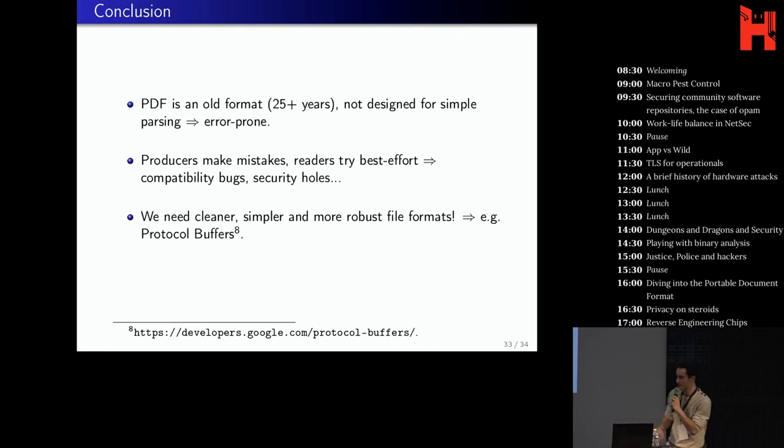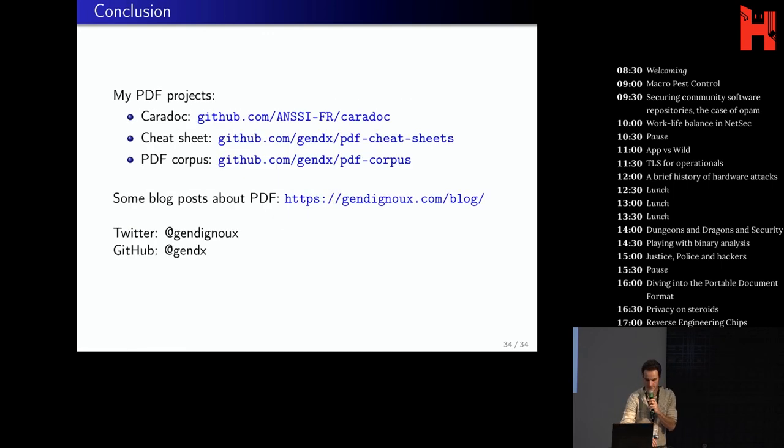So to conclude, PDF is a very old format. Well, it's 25 years old, but it hasn't evolved so much at the syntax level. And it wasn't designed for simple parsing, which is error prone. Also, producers make mistakes, but readers try their best effort to correct them. And in the end, you just have compatibility bugs, security holes. And so I really think that we need cleaner, simpler, and more robust file formats. So here are some links if you want to know more about it. And if you have any questions, I'm ready. Thank you.